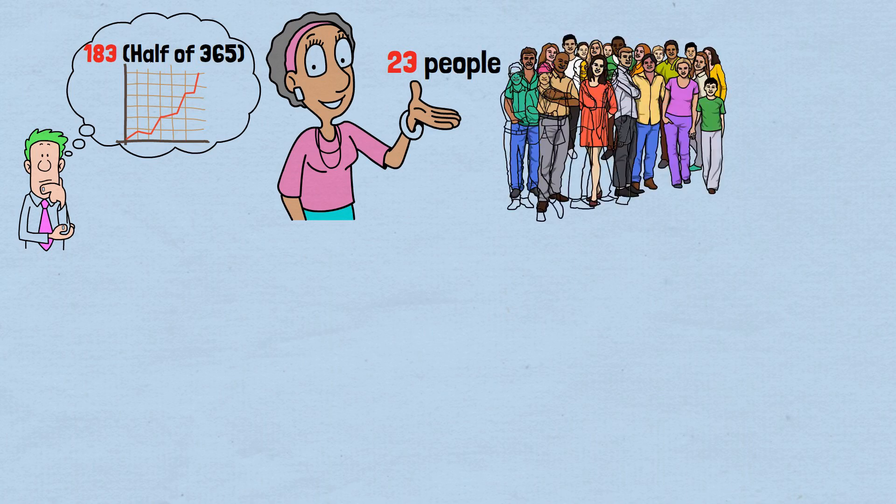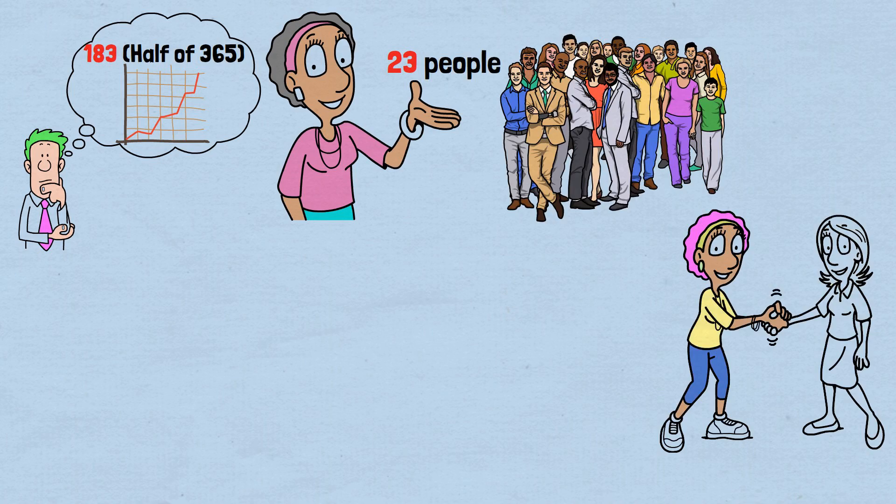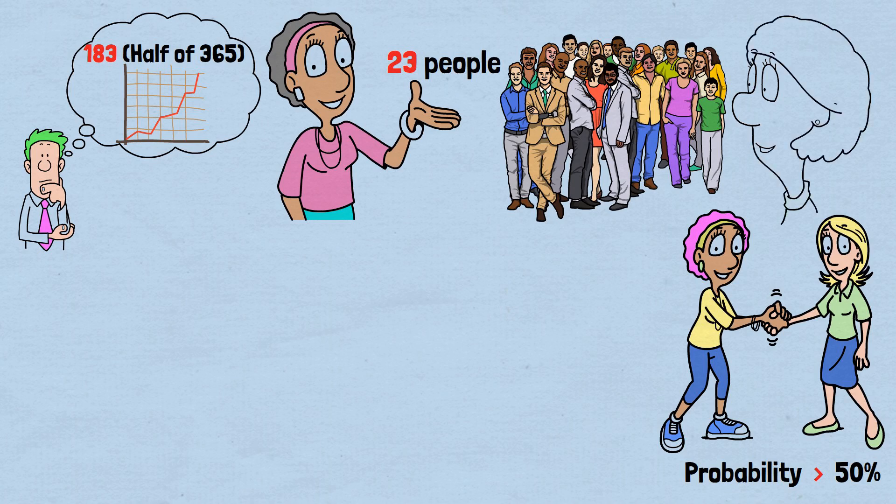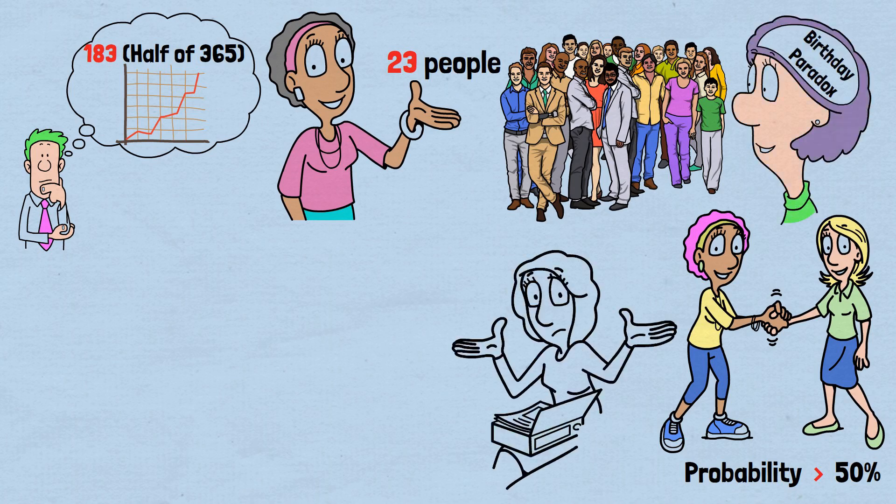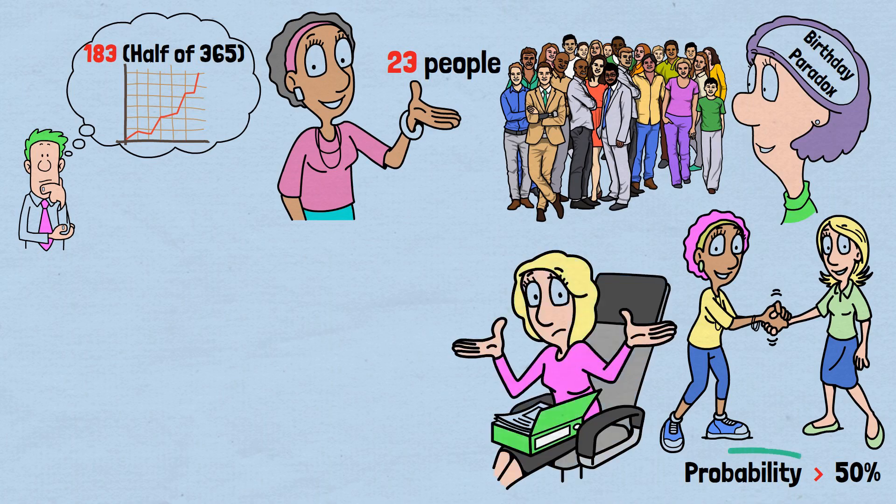Yes, with only 23 random people in a room, the probability that at least two share a birthday exceeds 50%. This mind-bending result is known as the birthday paradox, and it reveals how deeply our intuition fails when dealing with probability.